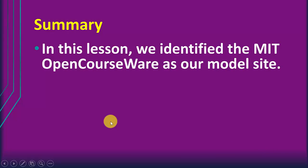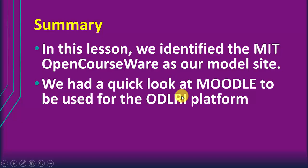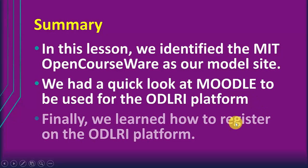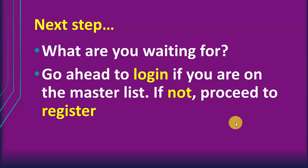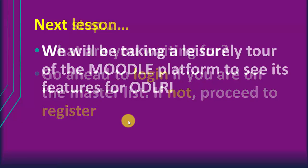So what have we done in this lesson? One, we identified a model site: the MIT OpenCourseWare. We also took a quick look at Moodle, which we're going to use for our ODLRI platform. And finally, we learned how to register on the ODLRI platform. All you need to do after this is log in — if you have the master list credentials — or proceed to register. I'll be expecting all your registrations in the next couple of hours.